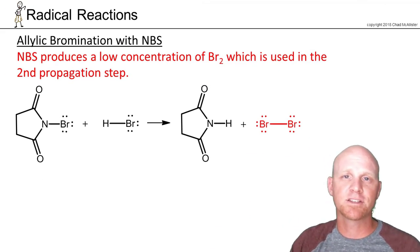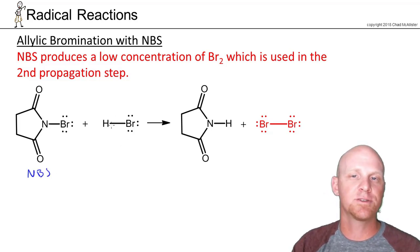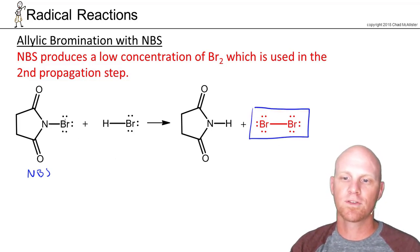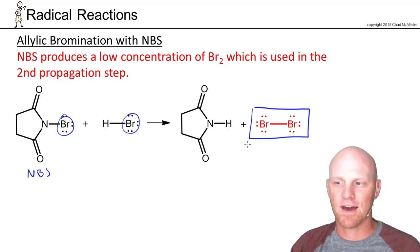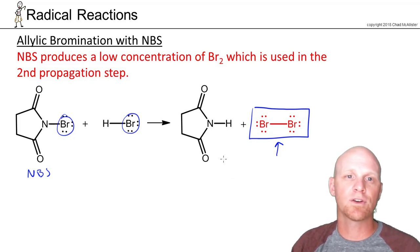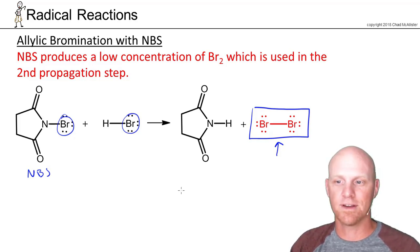Now we're going to take a look at the mechanism involving NBS. Before we get started, there's one thing to note: when NBS reacts with a molecule of HBr — which is one of the intermediates in this reaction — you can form a molecule of Br2. The bromine from NBS and HBr combine, and the nitrogen gets bonded to the hydrogen. The key point is that this generates a low concentration of Br2 in solution at any given time, which is why we avoid the addition reaction with Br2 — there's never a lot of it present.